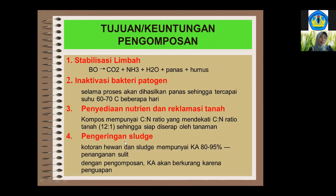Untuk sludge, penanganan sludge ini juga termasuk menguntungkan karena mengeringkan sludge sehingga mudah untuk ditangani. Kotoran hewan atau sludge biasanya kadar airnya cukup tinggi 80-90%, sehingga sulit untuk diangkut. Dengan proses pengomposan dengan menambahkan bulking agent seperti kulit kopi atau jerami yang dipotong-potong, dan selama proses pengomposan ada penguapan, maka sludge menjadi kering. Percobaan terakhir mengomposkan sludge dari digester anaerobik: dari sekitar satu ton menghasilkan kompos sekitar 700 kilo, artinya ada reduksi kadar air sekitar 30-40 persen.